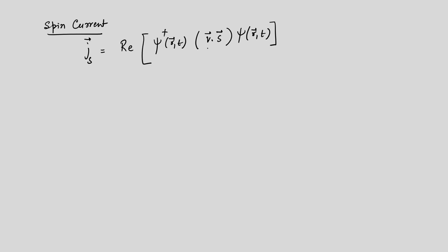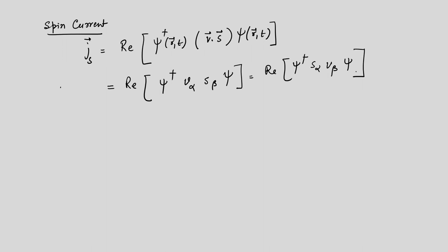One can write the components of the spin current as J^{alpha beta}_s equals the real part of psi dagger times v_alpha times S_beta times psi, which equals the real part of psi dagger times S_alpha times v_beta times psi. Here alpha and beta are the components x, y, and z. This is the spin current density.